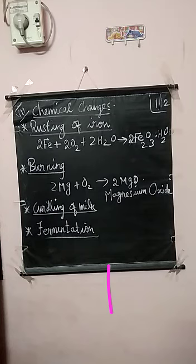After once alcohol is formed, we are not able to convert the alcohol back into sugar solution again. These are the examples given in your book on chemical changes.